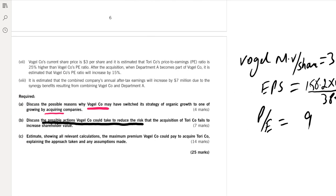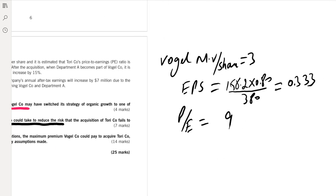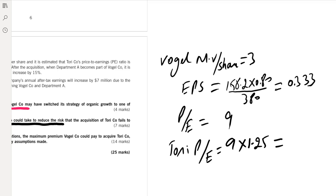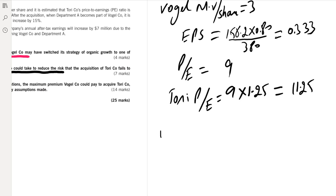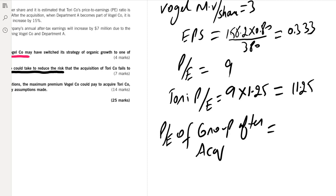ToriCo's PE ratio is 25% higher than Vogel's: 9 × 1.25 = 11.25. The group PE ratio after acquisition is 15% higher than Vogel's: 9 × 1.15 = 10.35.